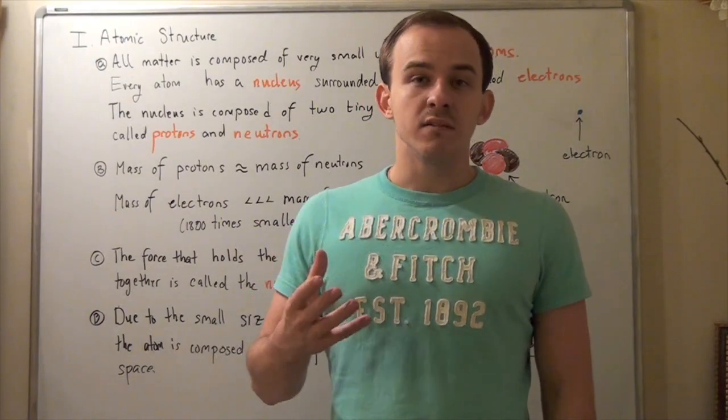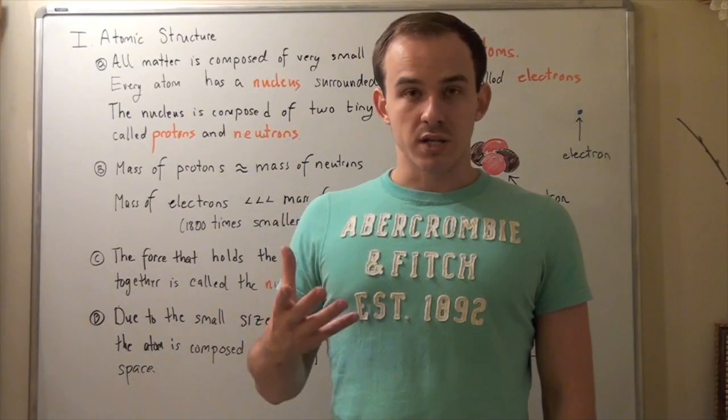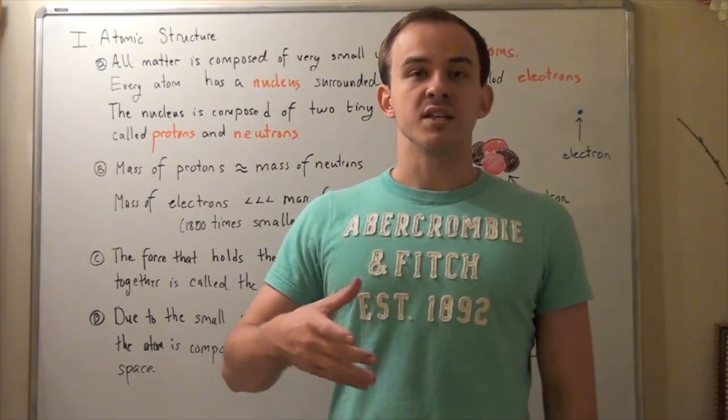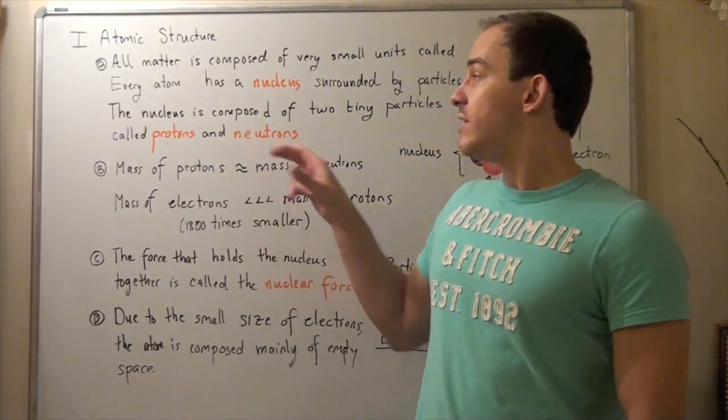Now atoms themselves are composed of nucleuses surrounded by electrons. Now a nucleus is composed of two types of particles called protons and neutrons.